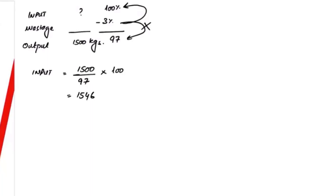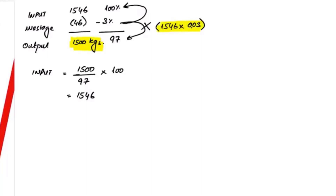So the input = 1500 divided by 97 multiplied by 100 = 1546 kilograms (rounded). This is the input we should be buying. Now take 3% of 1546: 1546 × 0.03 = approximately 46. So 1546 minus 46 gives us 1500 kilograms output. This works because wastage is 3% of input, not of output.